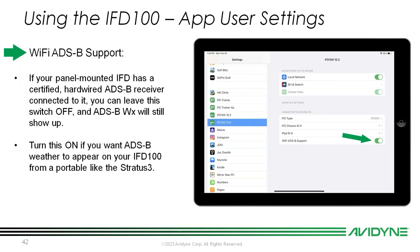The fourth setting is Wi-Fi ADS-B support. This gets missed a lot. If your panel-mounted IFD has a certified hardwired ADS-B receiver — Skytrax 200, GTX 345, or NGT 9000 — leave this switch off. ADS-B weather will still show up on your IFD100. If you are using a third-party wireless receiver such as a Stratus 3 or a Level Box, turn that on — it tells IFD100 to look for traffic and weather from the receiver, not the IFD. To recap: hardwired receiver — switch off; wireless receiver — turn it on.